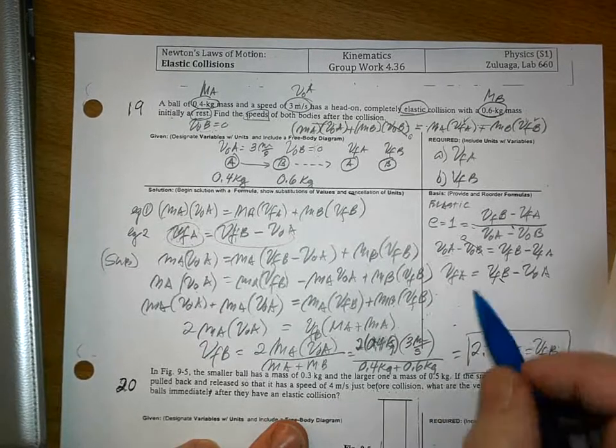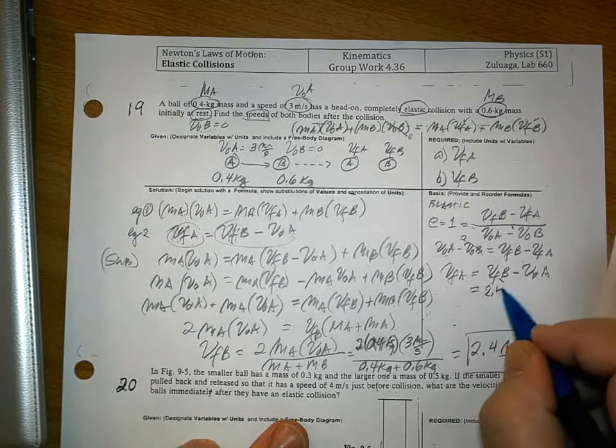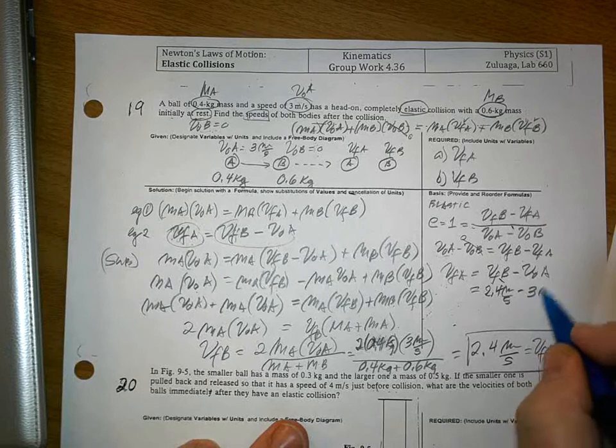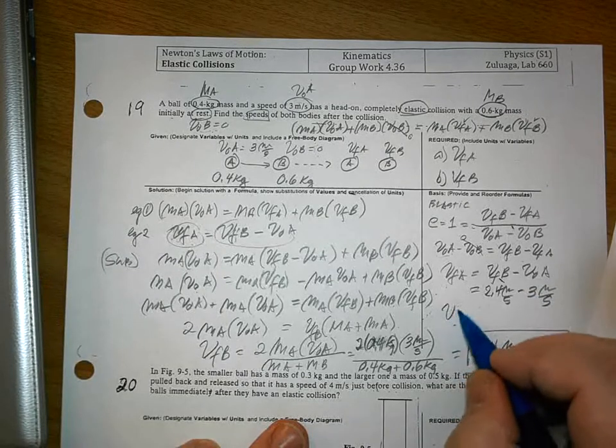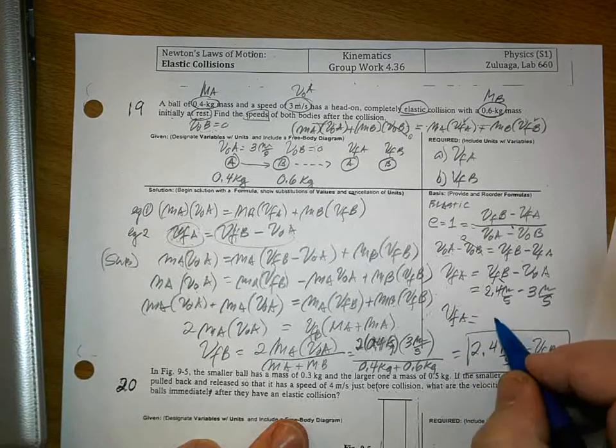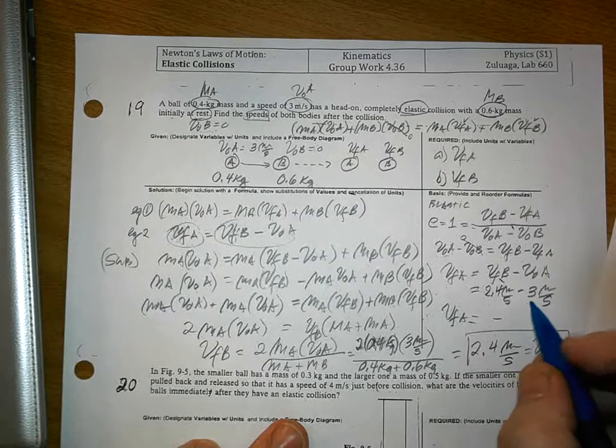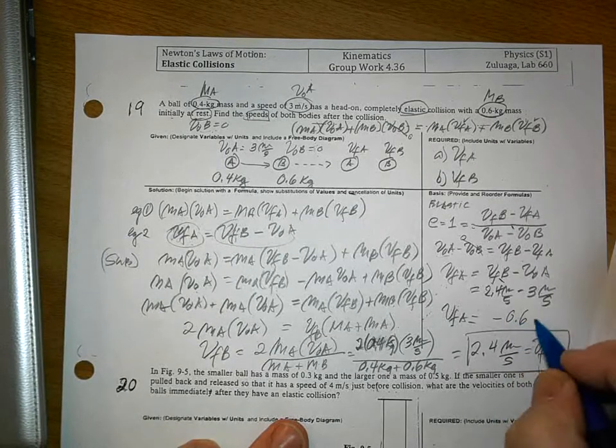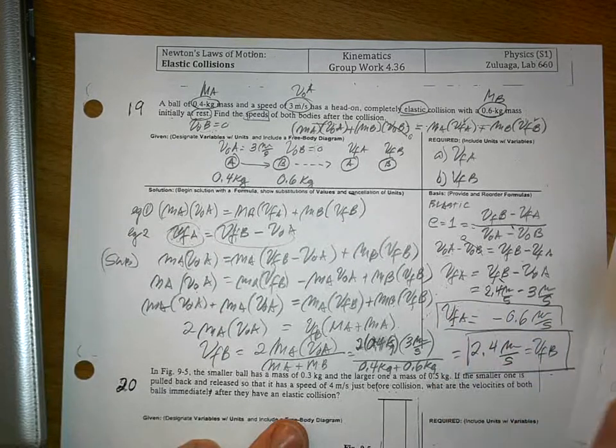Now, to find VFA, I'm going to substitute it here. This is 2.4 meters per second minus 3 meters per second. VFA is negative 0.6 meters per second.